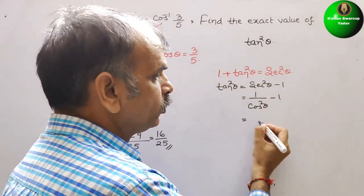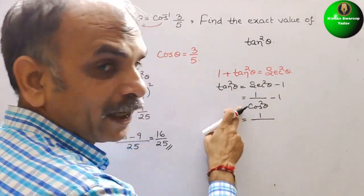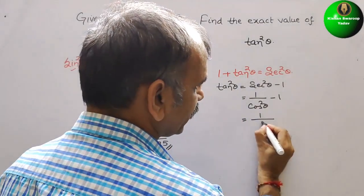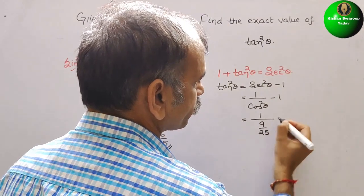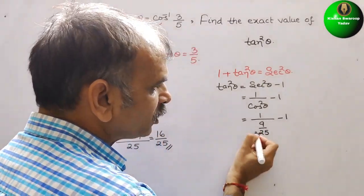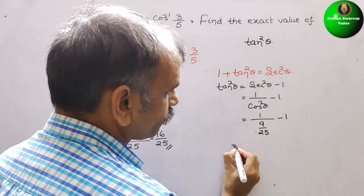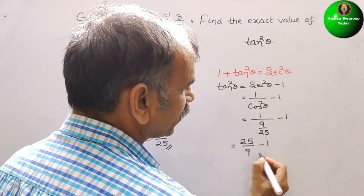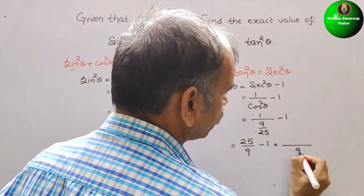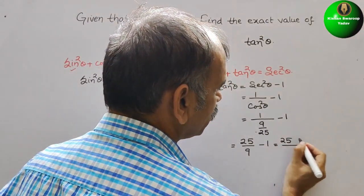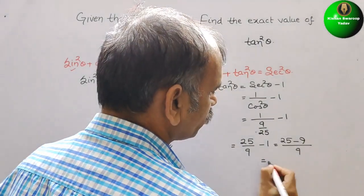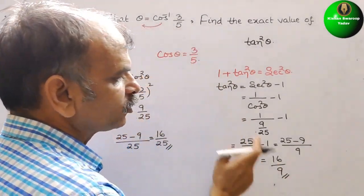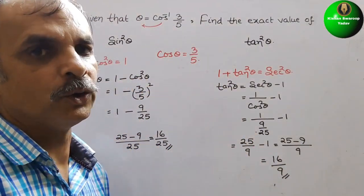Now substitute the value. We get 1 by cos square, and cos square is nothing but 9 by 25. So we write 1 divided by 9 by 25 minus 1, which is 25 by 9 minus 1. Taking the LCM, which is 9, we get 25 minus 9, that is equal to 16 by 9. So 16 by 9 is your tan square theta. So like this we have to do it.